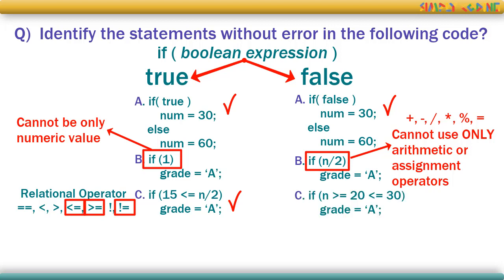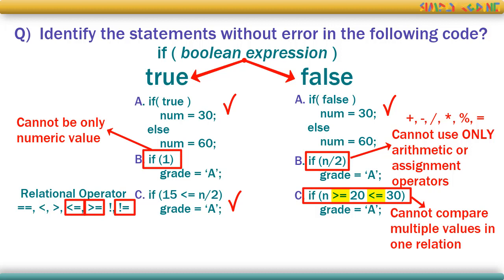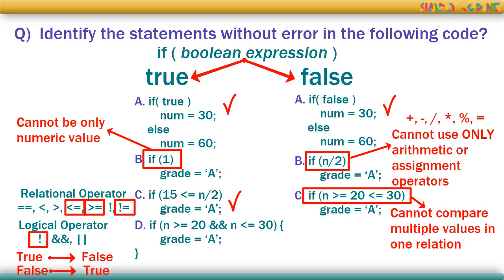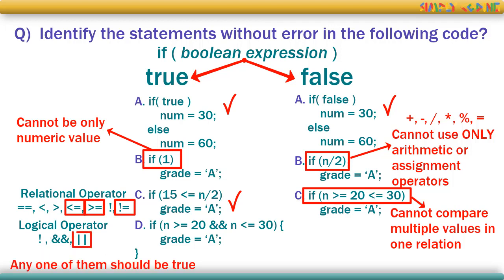At a time, you can compare only two values. If you try to compare multiple values in a single relational statement, it will give a compilation error. That's where logical operators come in: not, and, and or. Not means reverse — if true it becomes false, and if false it becomes true. And means all relational expressions have to be true. Or means any one of them should be true. Remember, the whole if condition still needs to be in round brackets.